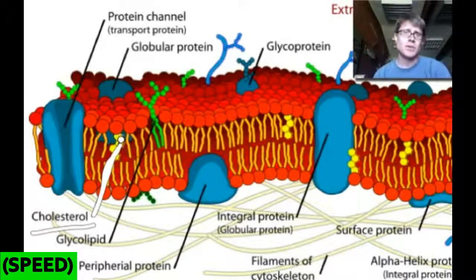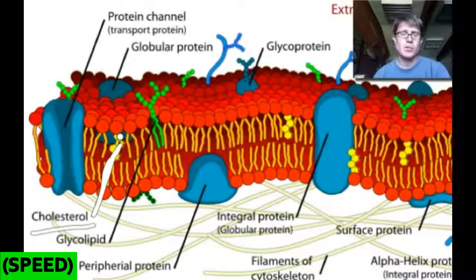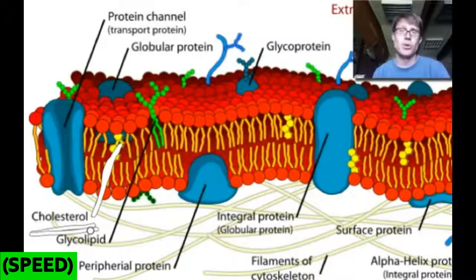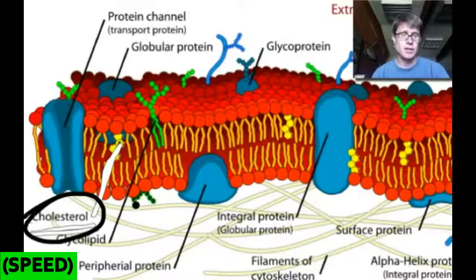And so what that does is it keeps the phospholipids from drifting apart too quickly. And so when you get hot or when the temperature increases, our cell membranes would start to fall apart if it weren't for cholesterol kind of grabbing those phospholipids and holding them together. The other role that cholesterol does, it actually keeps them apart so they can't get too close. So as the cell membrane gets too cold, cholesterol keeps those things apart. So cholesterol actually has a really important role inside the cell membrane.